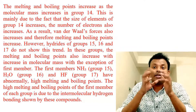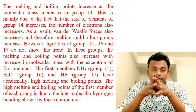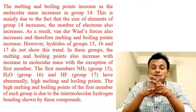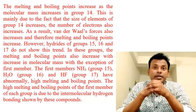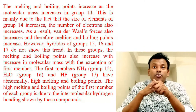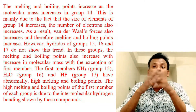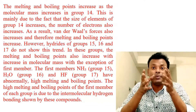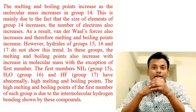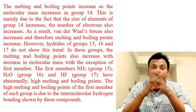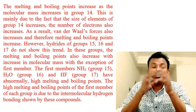The melting point and boiling point increase as molar mass increases in group 14. This is because the size and number of electrons of group 14 elements increase, so van der Waals forces also increase. However, hydrides of groups 15, 16, and 17 do not show this regular trend. In these groups, melting and boiling points increase with molecular mass, with the exception of the first members: NH₃ (group 15), H₂O (group 16), and HF (group 17), which have abnormally high melting and boiling points due to intermolecular hydrogen bonding.